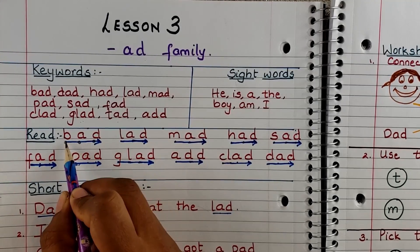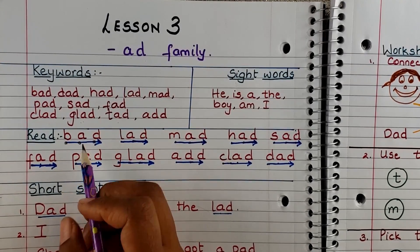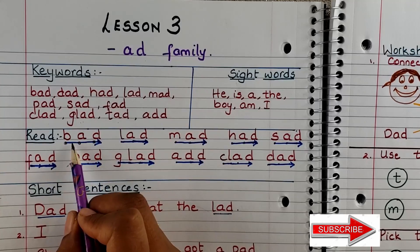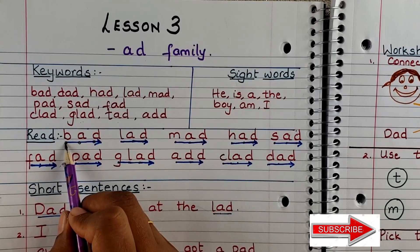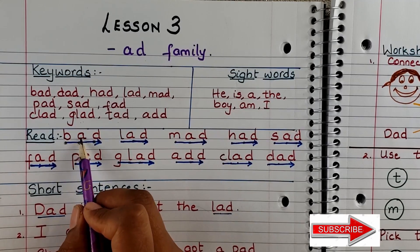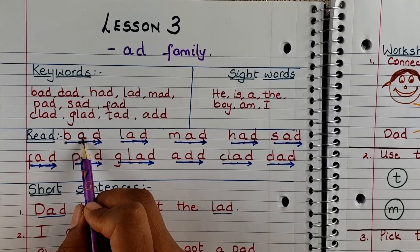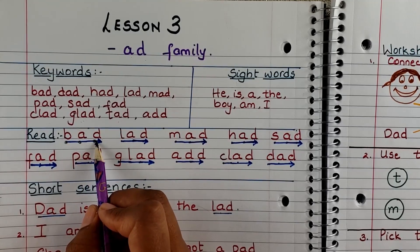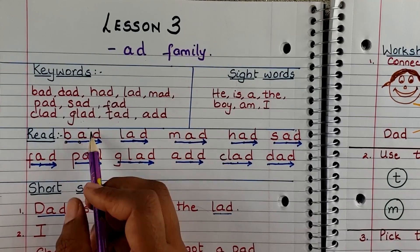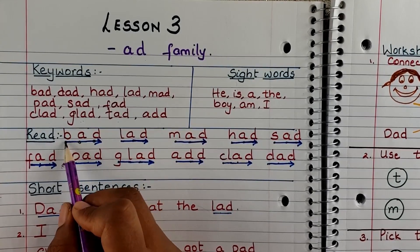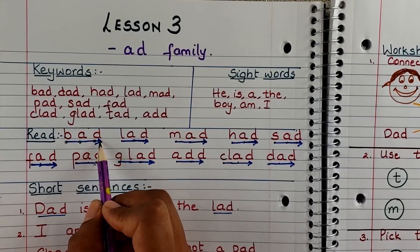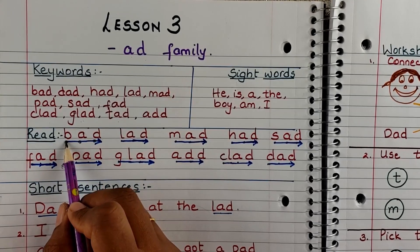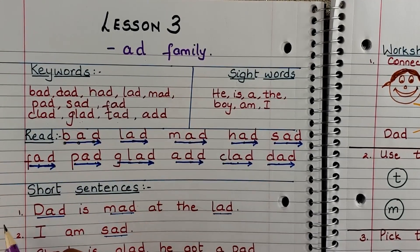Let's read. You always want to start with the three dots under the words, and then you're going from left to right, blending the first two letters initially and making a sound there, and then blending the third one. Just like: bad, bad, bad.